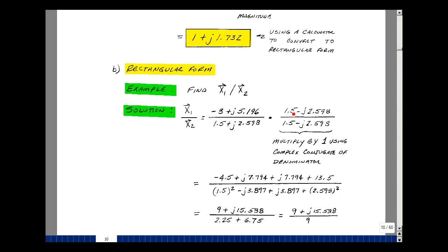So I'll take this first term times this, I get a minus 4.5, and I take the minus 3 times the minus J 2.598, and that's a plus J 7.794, and then I took this term times this, which is a plus J 7.794, and then the product of these two, I get a J squared, which is minus 1, I have an additional minus 1 here, and the product of those two is 13.5. For the denominator, though, I have 1.5 times 1.5, so I get that squared, and then I have this term times this term, which is a minus J 3.897, and then I have this term times this, and it's a plus J 3.897, and then the product of these two, I get 2.598 squared, and then I've got J times J, which is minus 1, times another minus 1.